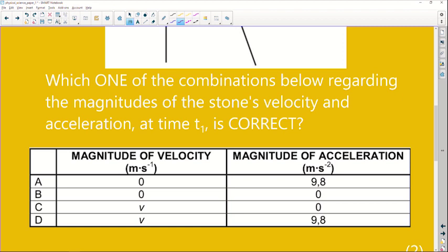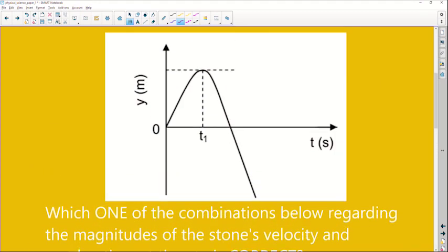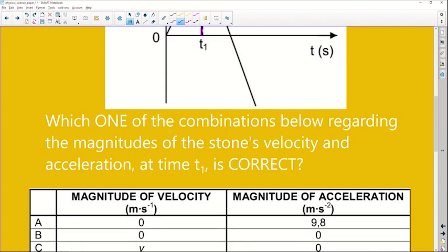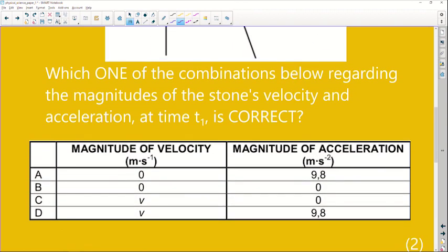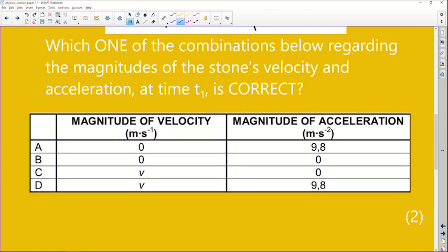So then they ask us which one of the combinations below regarding the magnitudes of the stone's velocity and acceleration at time t1 is correct. So they are only interested at time t1 what the velocity and acceleration, the magnitudes of those two are. So if we look at the options here, we've got A, B, C, and D.